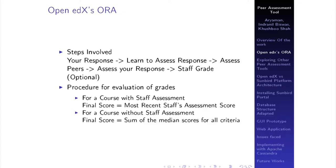It starts with submitting your response, and the next phase is to learn how to assess a response. Since the peer assessment process involves a lot of complications, we must initially ensure that the user performing the peer assessment understands what it is. The next phase is to assess peers, where students assess responses of others enrolled in the same course. Then comes assessing your own response — since your point of view becomes wider after seeing how you graded others, you can more correctly judge your own response.